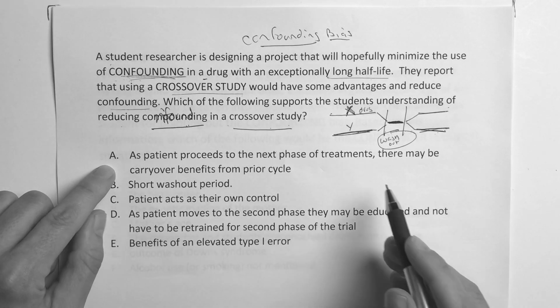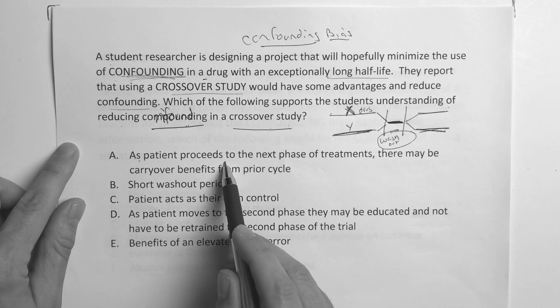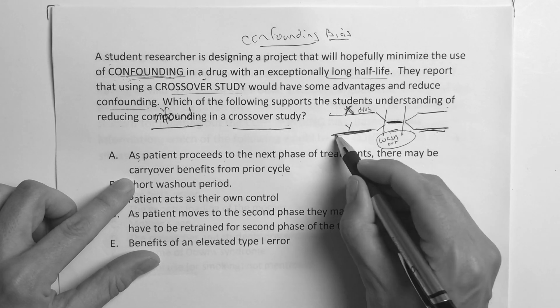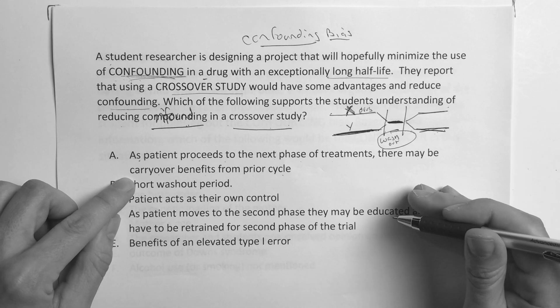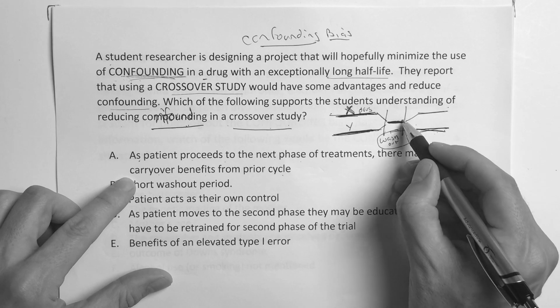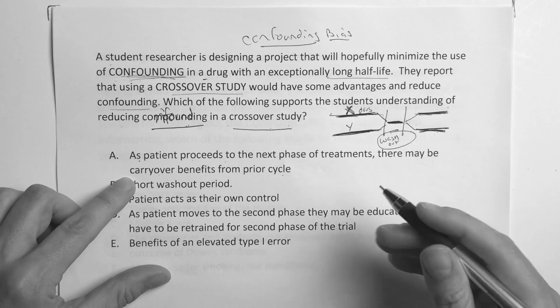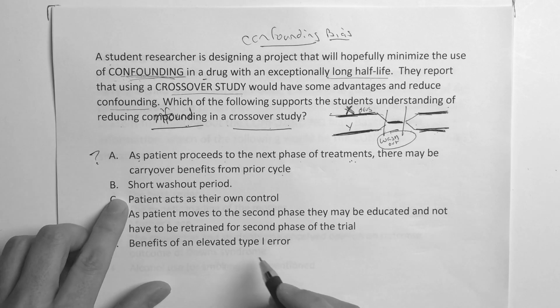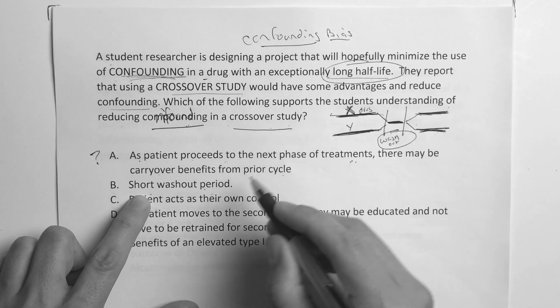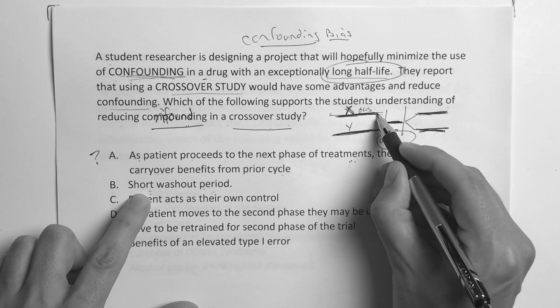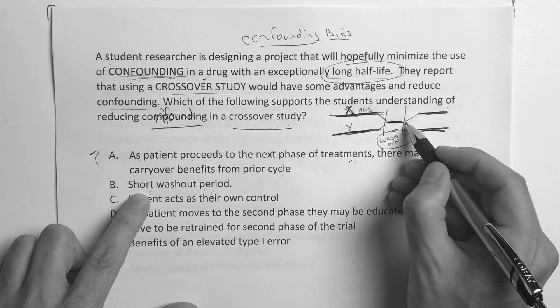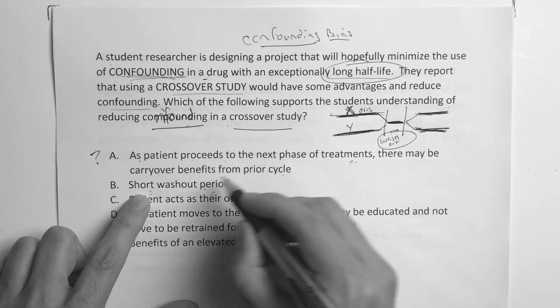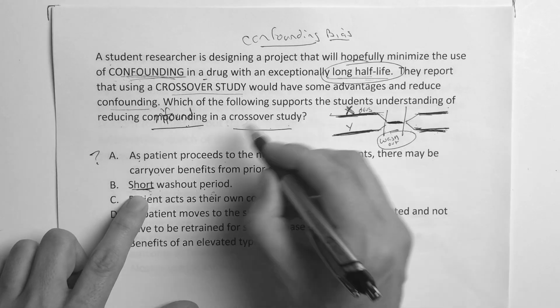Now, let's see what it says. Is it A, as patients proceed to the next phase of treatments, there may be carryover benefit from the prior cycle? Well, that's kind of true, but we don't know if that really would help reduce the confounding here. Because if someone's kind of influenced already, then chances are that might impact them on the back side of this study. A short washout period, well, this was a long half-life drug. So if we have a real short washout period, then the people who were taking the drug, if they don't allow that drug to wash out of their system, then it could carry into the second phase of the study.